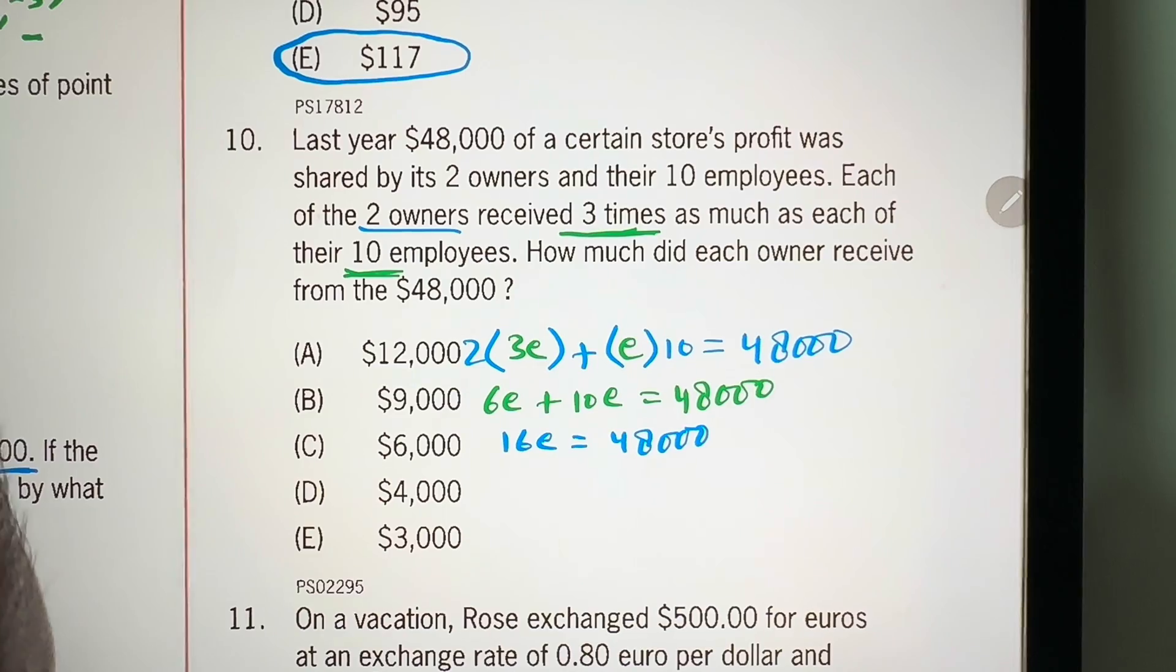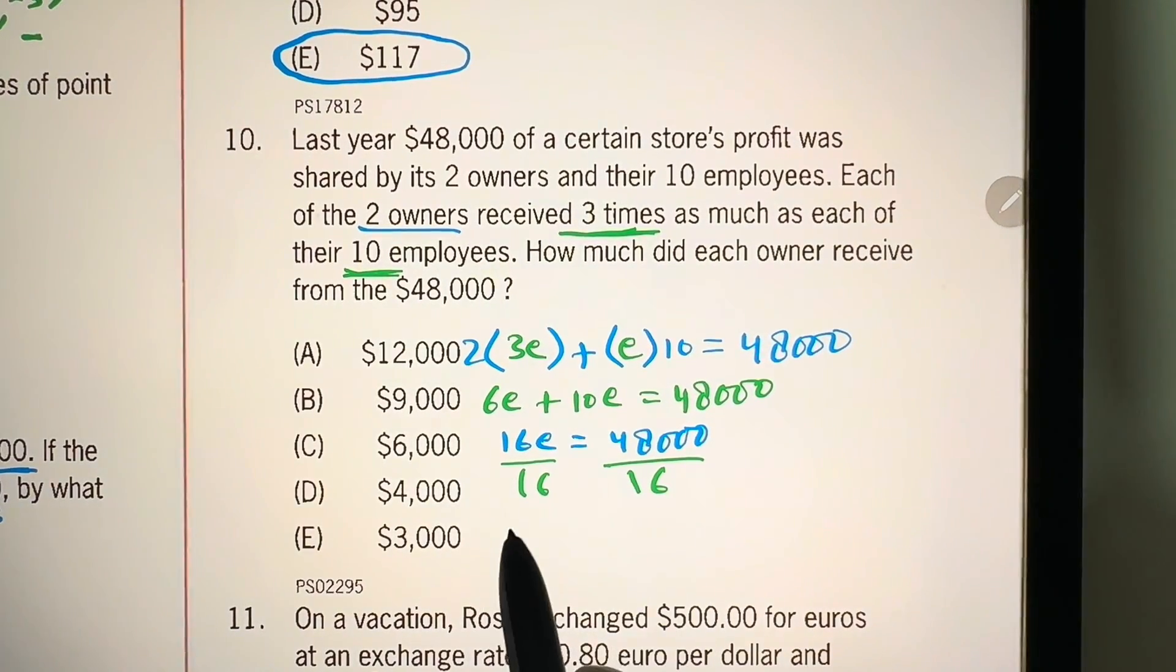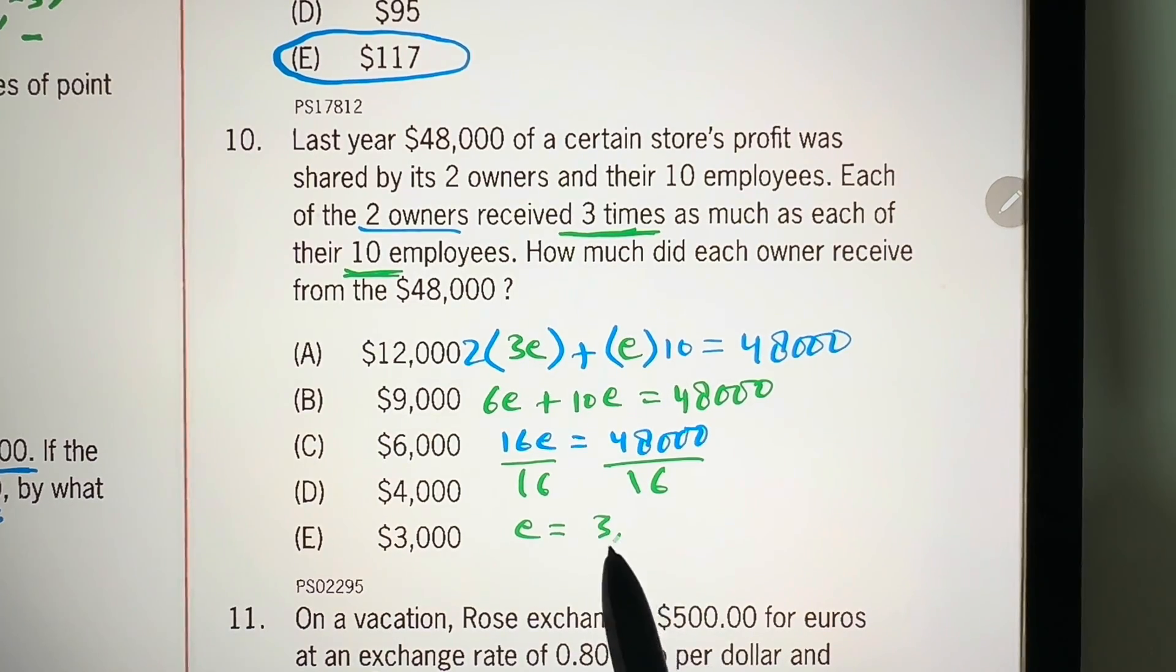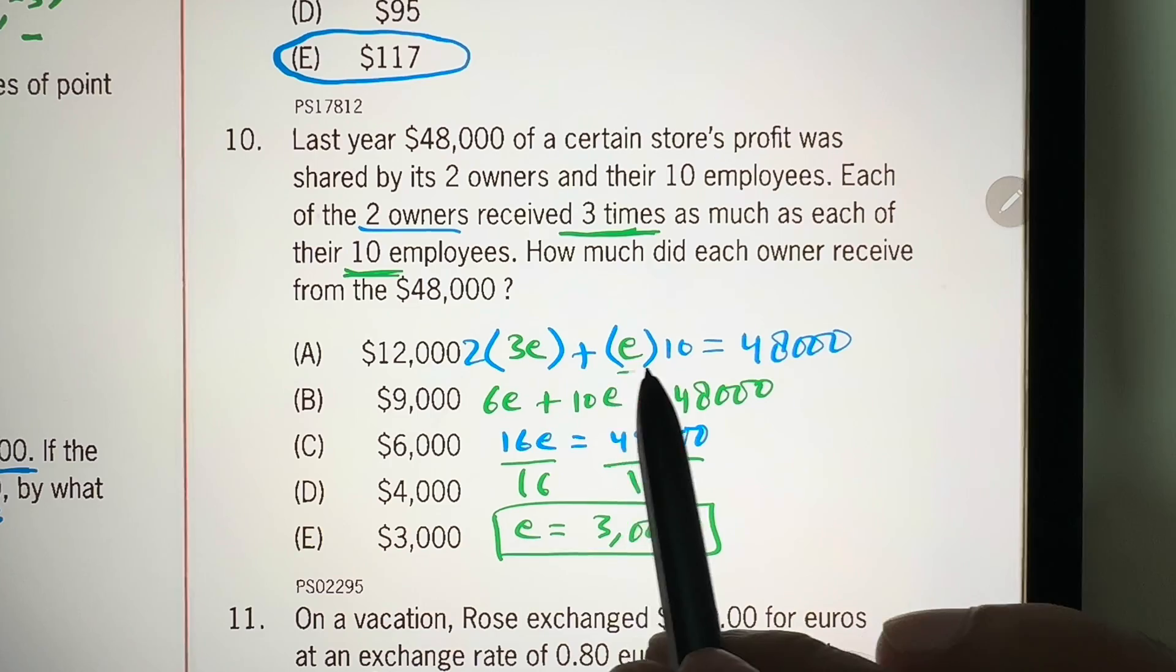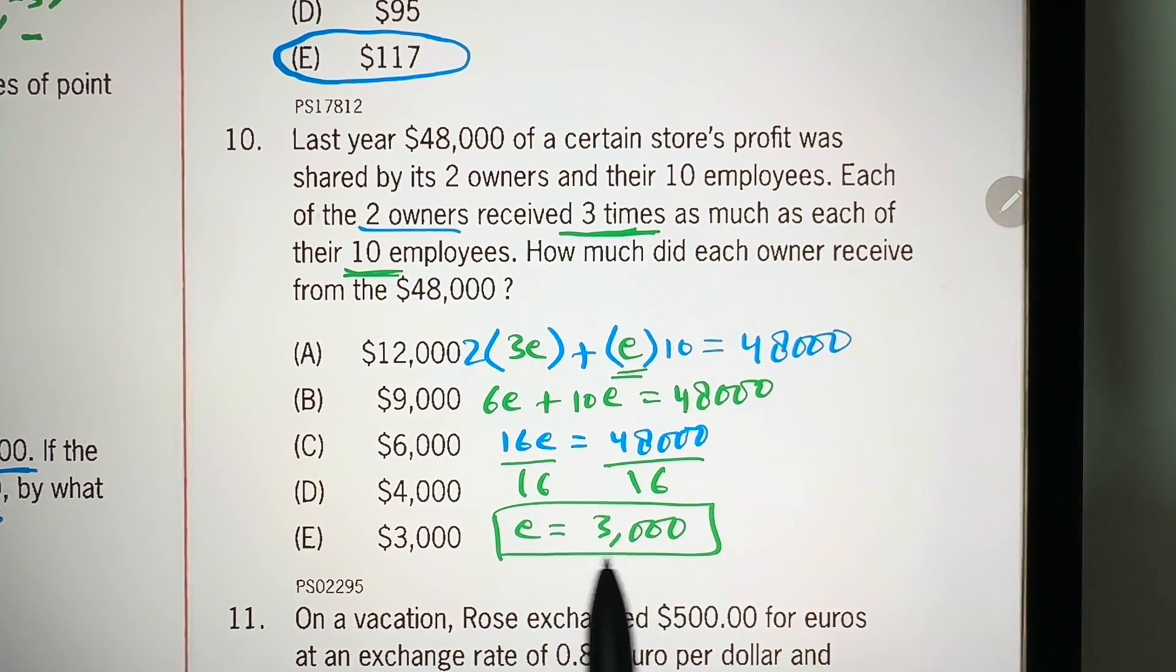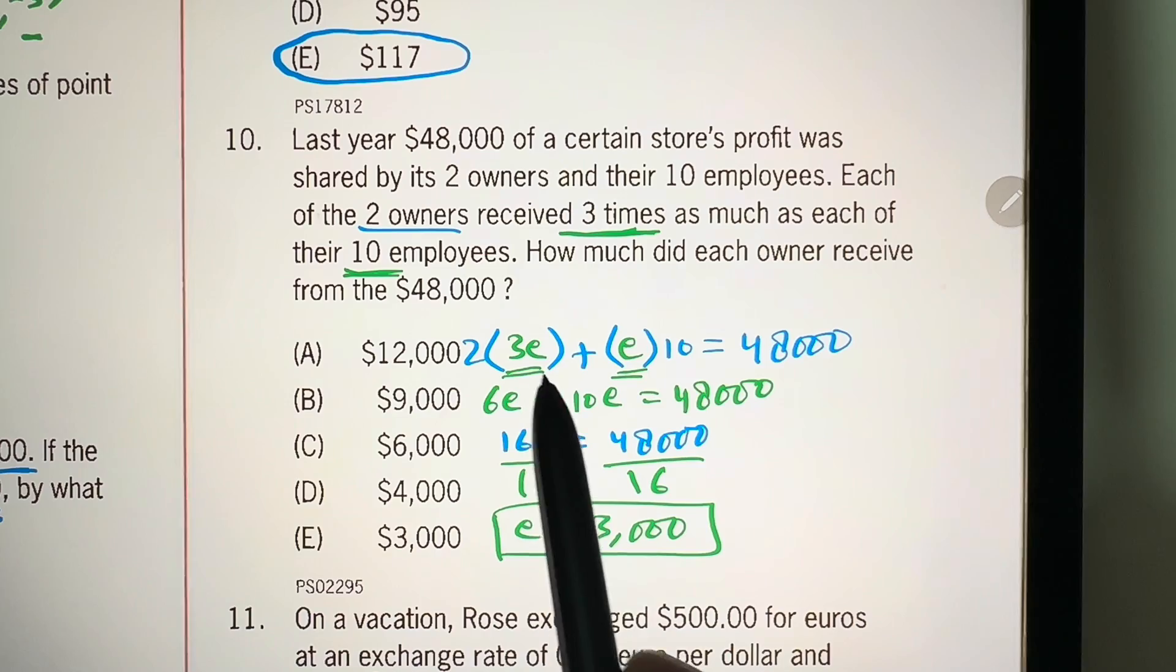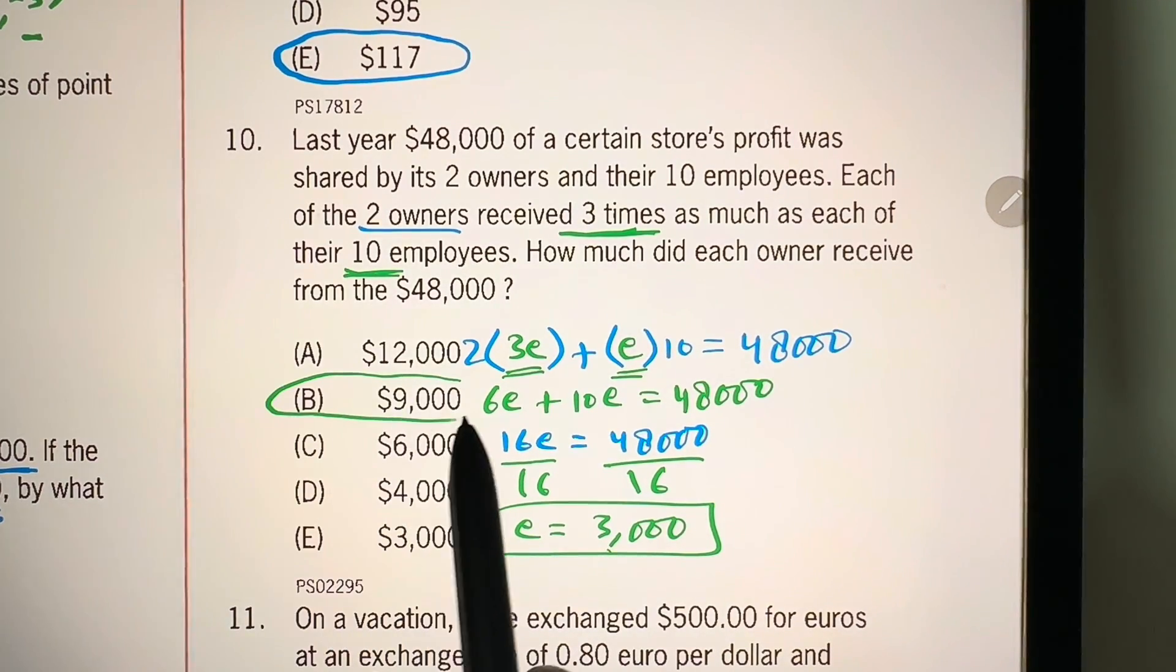E is equal to 3,000. E is what every employee is getting, that is 3,000, and each owner is getting three times of that. So, three times three is nine, 9,000 is our answer, choice B.